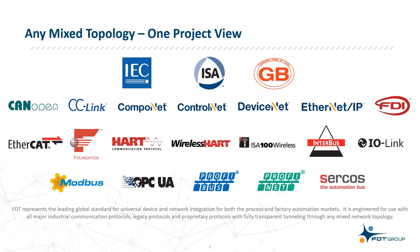An open, flexible, and scalable standard supporting process and discrete applications in brownfield and greenfield environments. Today, the standard supports over 17 protocols and platforms, and because FDT was designed as a network agnostic platform, the standard remains open to support any communication protocol or network, including new industrial Ethernet protocols for end-to-end integration, all the while supporting transparent tunneling through mixed topology architectures.